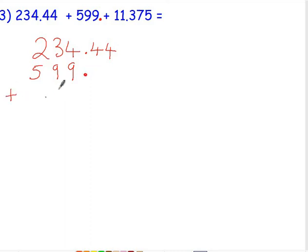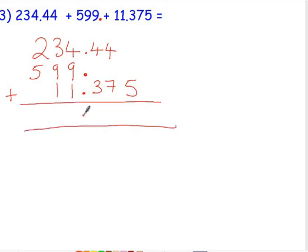And then finally we're adding 11.375. So this time we've got our decimal point now straight in the answer. If we want to put the same number of digits after the decimal point, we're going to need to add one zero to the first number and then three zeros to the second number.